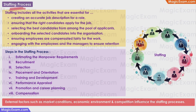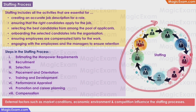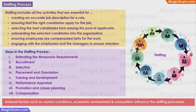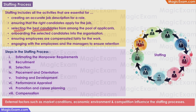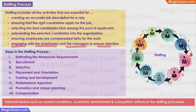Next, let us look at staffing as a process. Staffing is a process because there are a series of well-defined steps, and also because staffing is a cycle that never actually stops — as long as the organization is active, staffing will continue. Staffing includes all activities essential for creating accurate job descriptions, ensuring the right candidates apply, selecting the best candidates, onboarding them, ensuring fair compensation, and engaging with employees and managers to ensure retention.